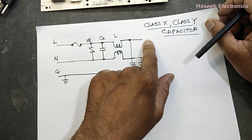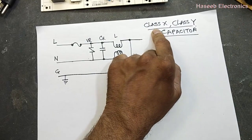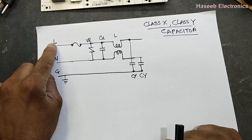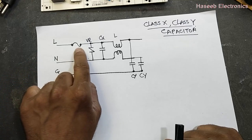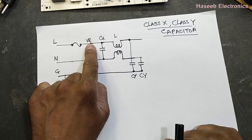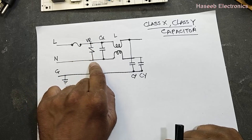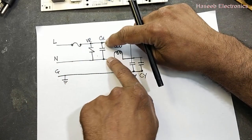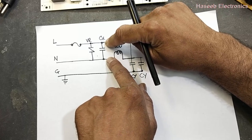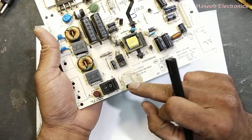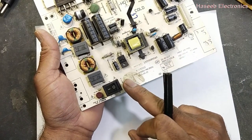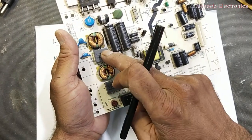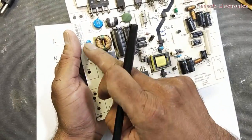Assalamu alaykum wa rahmatullahi wa barakatuh. Today we will discuss Class X and Class Y capacitors. When we see a diagram of any circuit, we apply line and neutral in a two-wire system, then we have a fuse, then a resistor, MOV voltage arrestor in parallel. Then we see another component: the Class X capacitor connected across the line. For example, we apply 220 volts, then fuse, and after the fuse we have capacitor, inductor, capacitor, inductor, and two capacitors here.